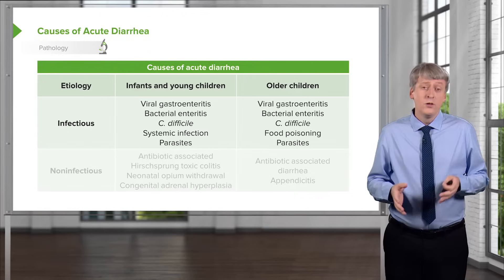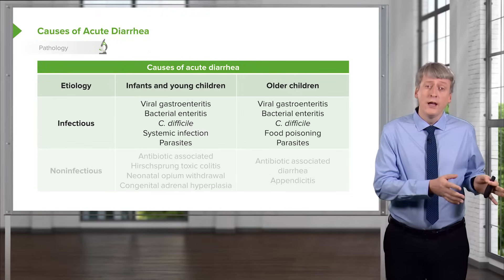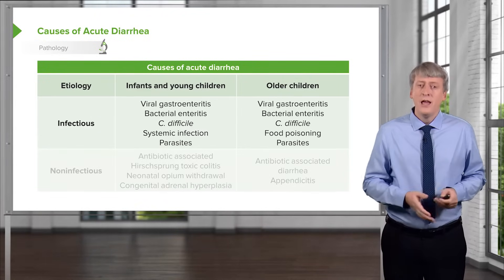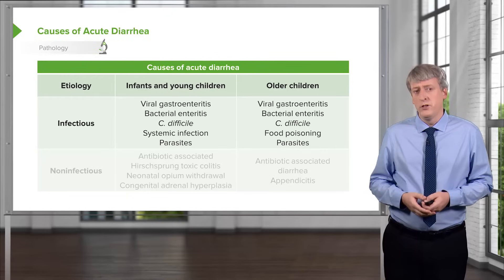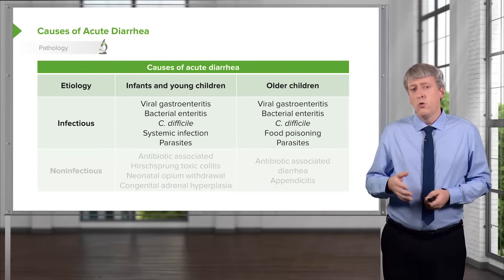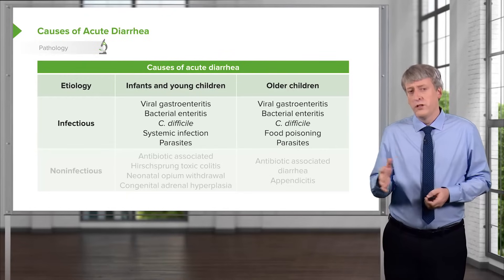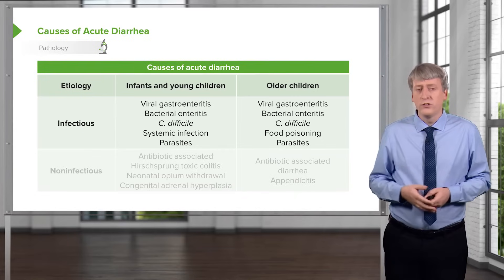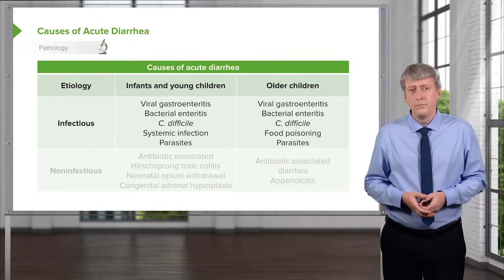Viral illness used to be more in the spring with rotavirus outbreaks, but that's less common now because of vaccination. So it now tends to be a little bit more in the summer and perhaps into the fall as well. And of course, in the winter, we see some viral gastroenteritis as well.